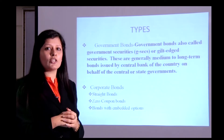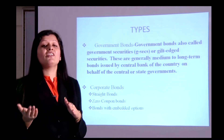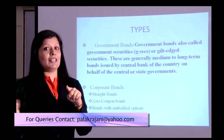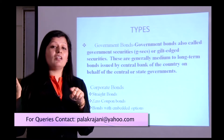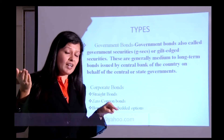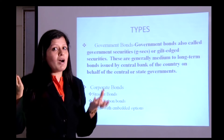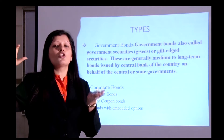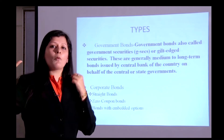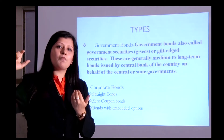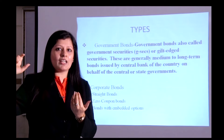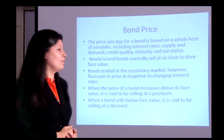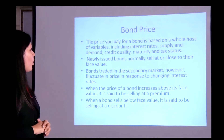Now consider the put option from the investor's point of view. What if the interest rate rises to 12% in the market? You hold a bond paying 10%, and the market rate is 12%. If you go to sell this bond in the secondary market, it will be priced lower because demand for it will fall. So to protect you, I give you a put option — the right to sell the bond back to me at face value or principal price.